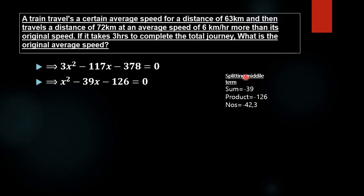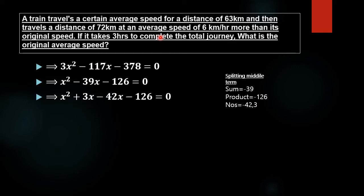We will use the splitting the middle term method to solve this equation. We need to find two numbers whose sum equals minus 39 and whose product equals minus 126. The numbers are minus 42 and plus 3, since minus 42 plus 3 equals minus 39, and minus 42 times 3 equals minus 126. We use these two numbers to split the middle term: minus 39x becomes plus 3x minus 42x.